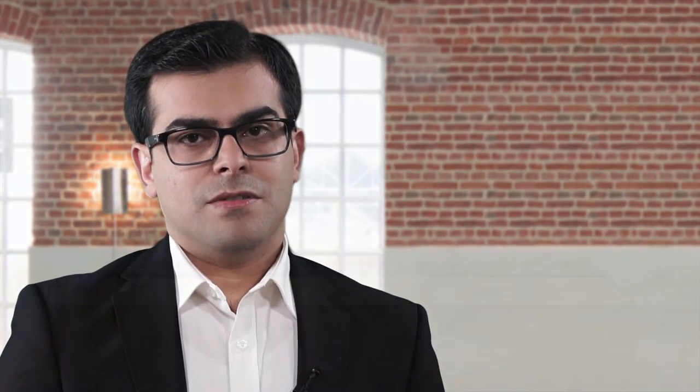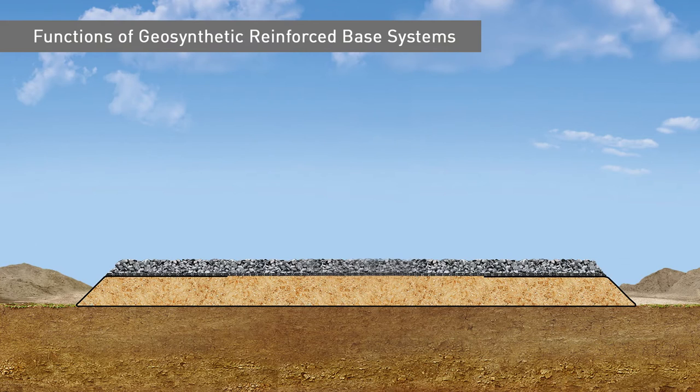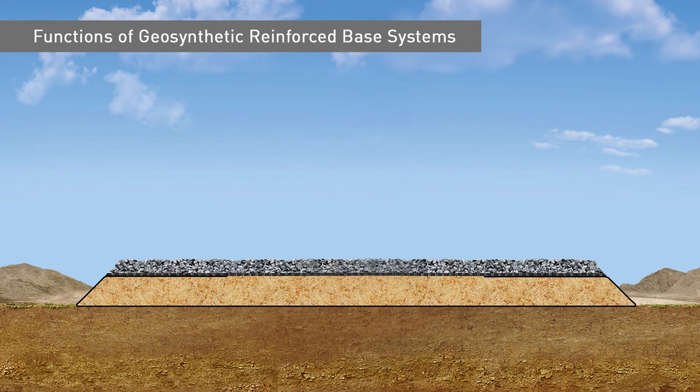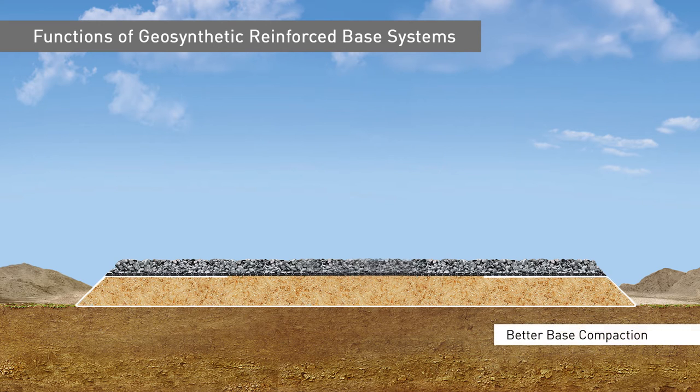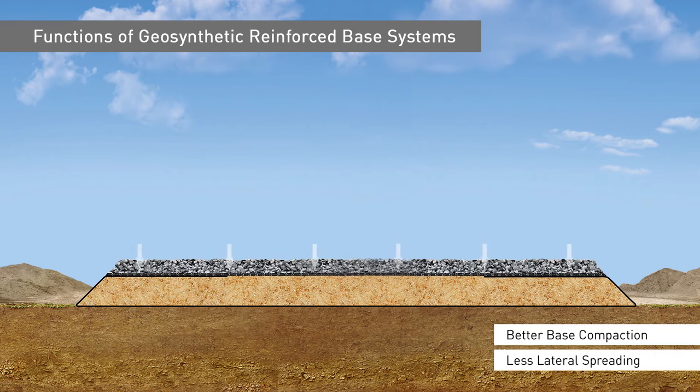The passive anchorage in conjunction with the tensioned membrane and higher confinement results in a greater bearing capacity, or a thinner layer of earth structure with equivalent performance in terms of bearing capacity. On the other hand, the lateral restraint provided by the geogrid guarantees a better base compaction with less lateral spreading in the vicinity of the slopes.